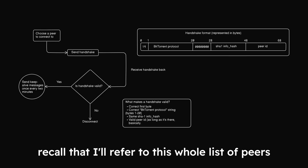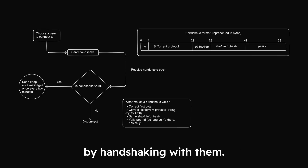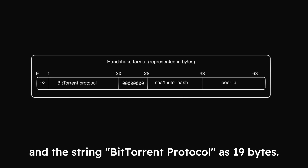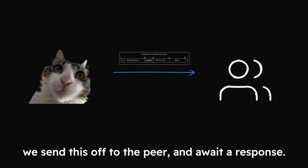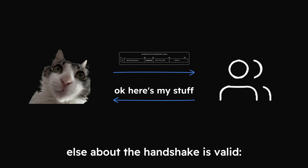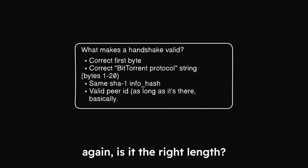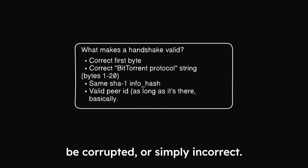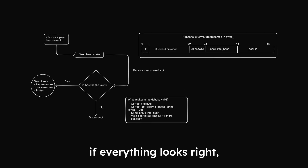To connect to a peer, we need to start by handshaking with them. The header is 68 bytes long. It starts with the character 19 as a single byte and the string 'BitTorrent protocol' as 19 bytes. There are then 8 bytes of padding, the 20-byte SHA-1 info hash, and our 20-byte peer ID. We send this off to the peer and await our response. The peer sends back what they think their SHA-1 hash is and ensures everything about the handshake is valid and at the right length. We validate this handshake, and if the peer's SHA-1 hash does not match ours, we sever the connection. If everything looks right, we move on to the next step.